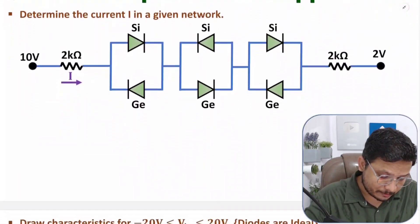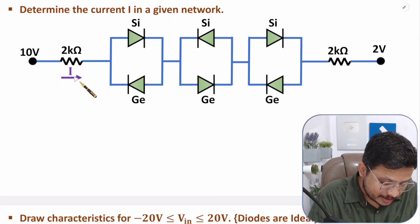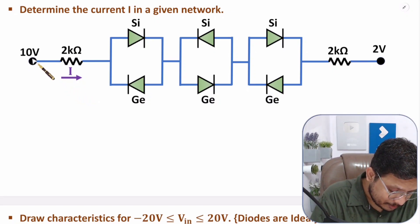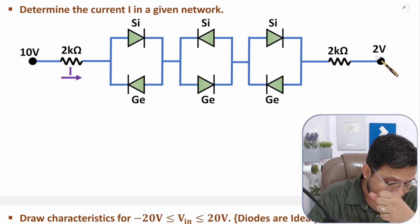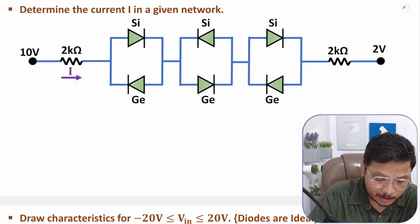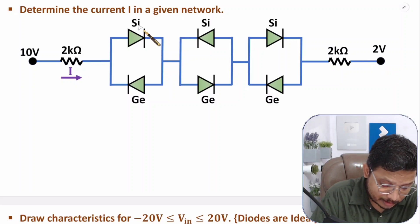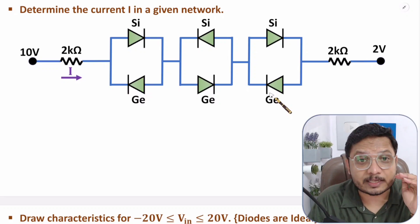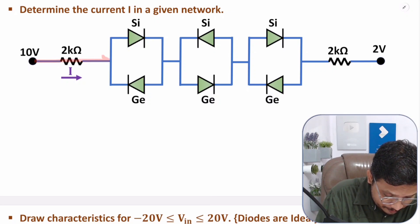In the first question we need to find current I in this circuit. Current I is flowing in this direction, which we need to find. If you observe this circuit, at this terminal we have 10 volts and at this terminal we have 2 volts. Current can only flow from higher potential to lower potential, but only if the diode allows it. So first you need to understand through which diode current is flowing. If current is happening in this direction, we observe which diode comes in forward pass.